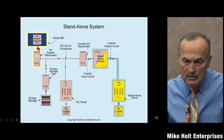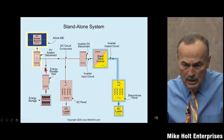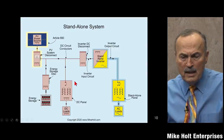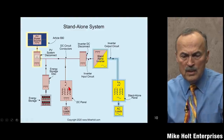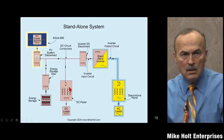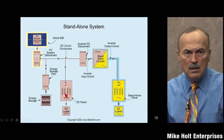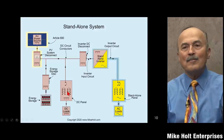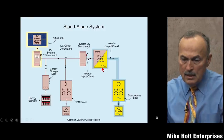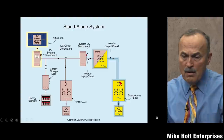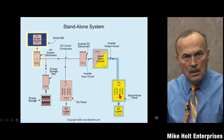Now: Article 690 ends at the disconnect. Energy storage is Article 706. Standalone is Article 710. Previously Article 690 had all those things combined, which was very difficult. Now different articles address the unique conditions of each system type. In a standalone system, electrons can go both ways through the energy storage. You can have DC panels with DC loads - standalone systems could be 12 volts, which is common in the RV industry.